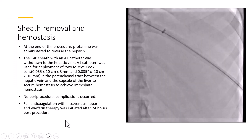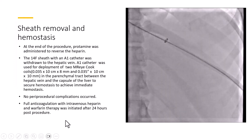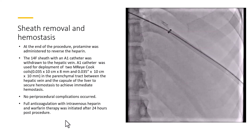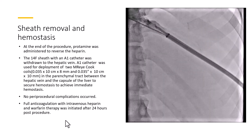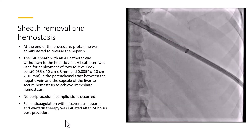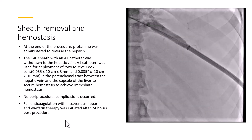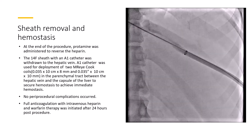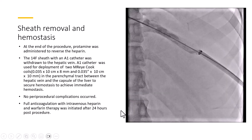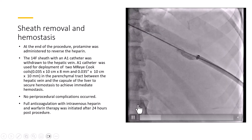At the end of the procedure, protamine was administered. The 14-French sheath with the Agilis catheter was withdrawn to the hepatic vein. The Agilis catheter was used for deployment of two Cook coils in the portion of the tract between the hepatic vein and the capsule of the liver to achieve immediate hemostasis.